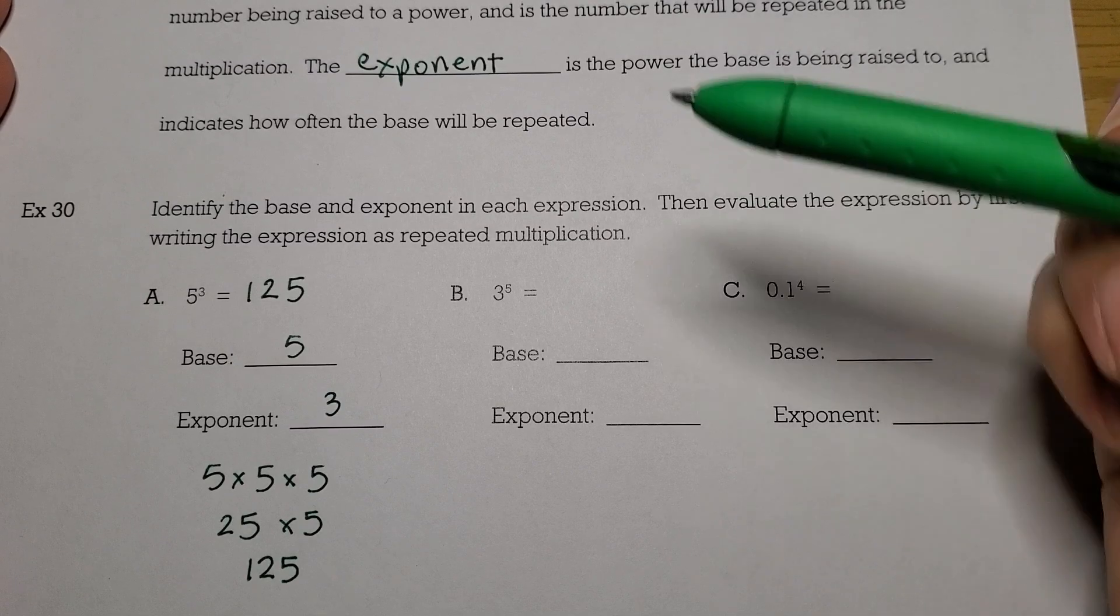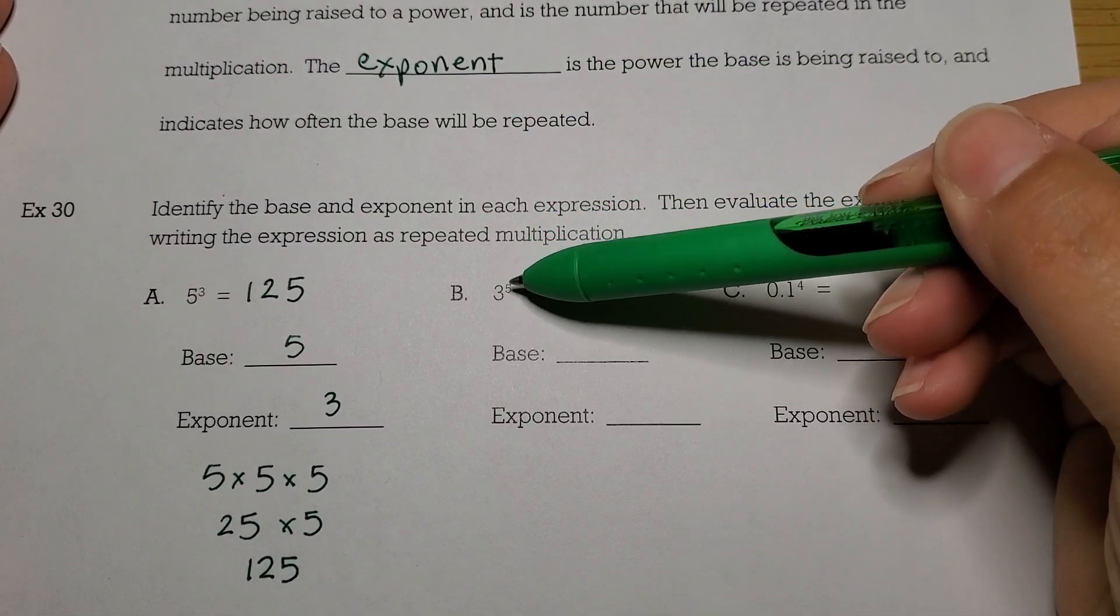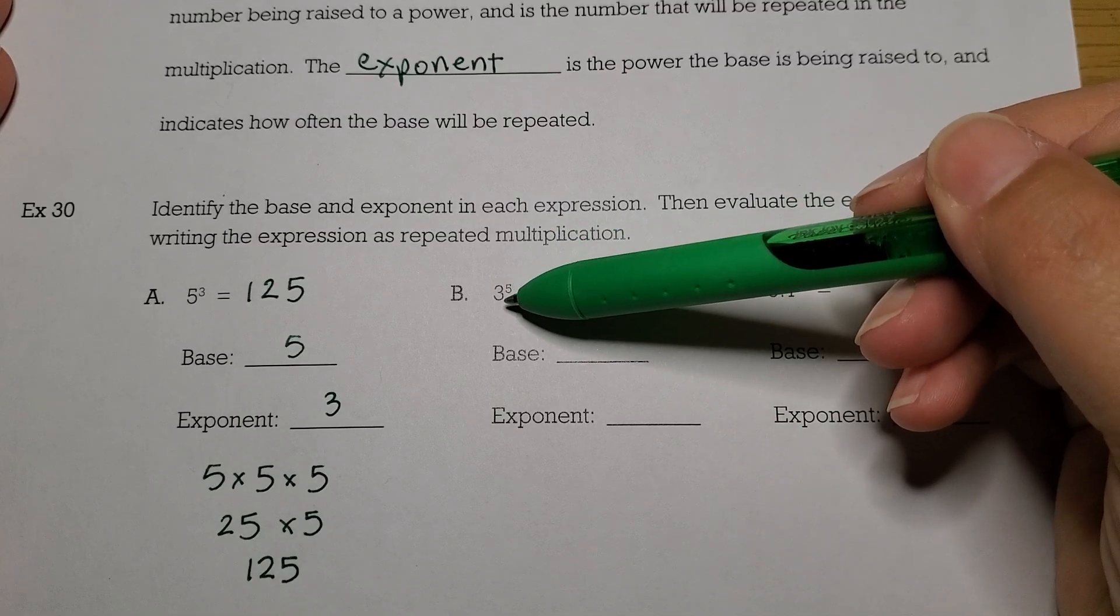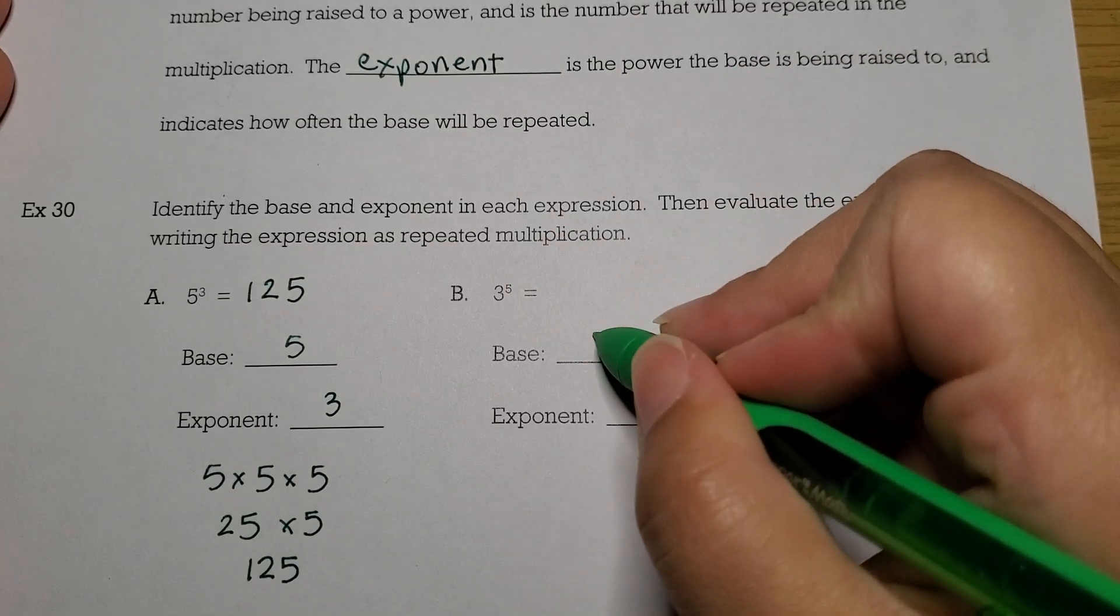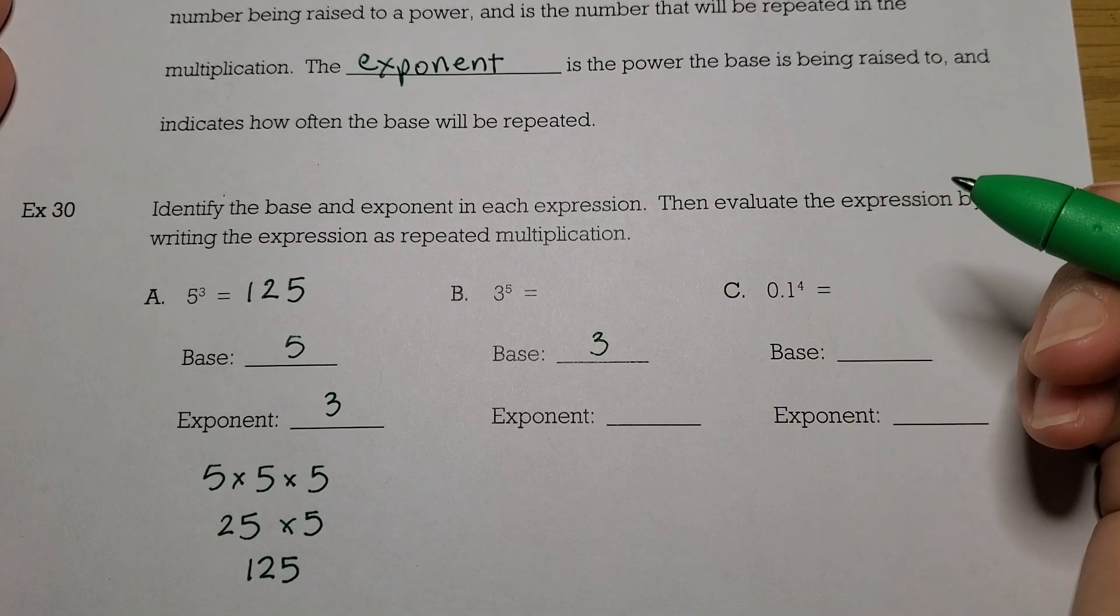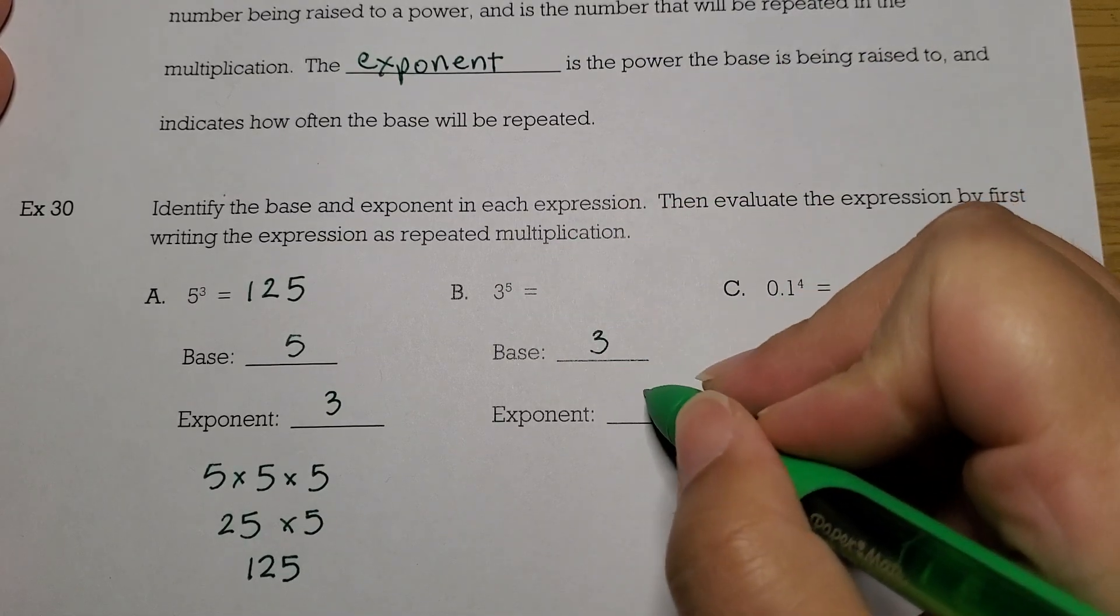Let's try the next one. So we have 3 to the fifth. So the base is the big number, 3. And the exponent, or power, is the little number, in this case 5.